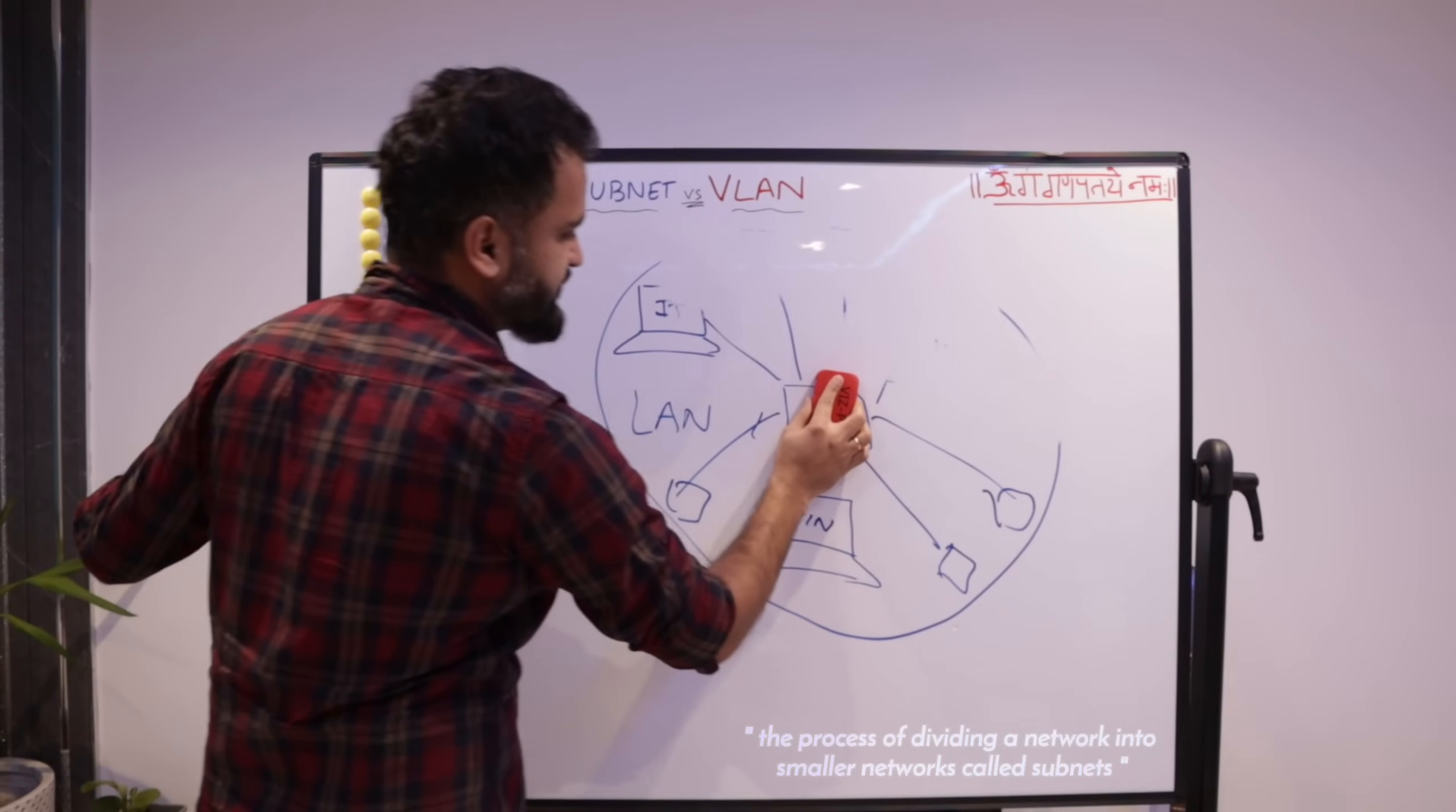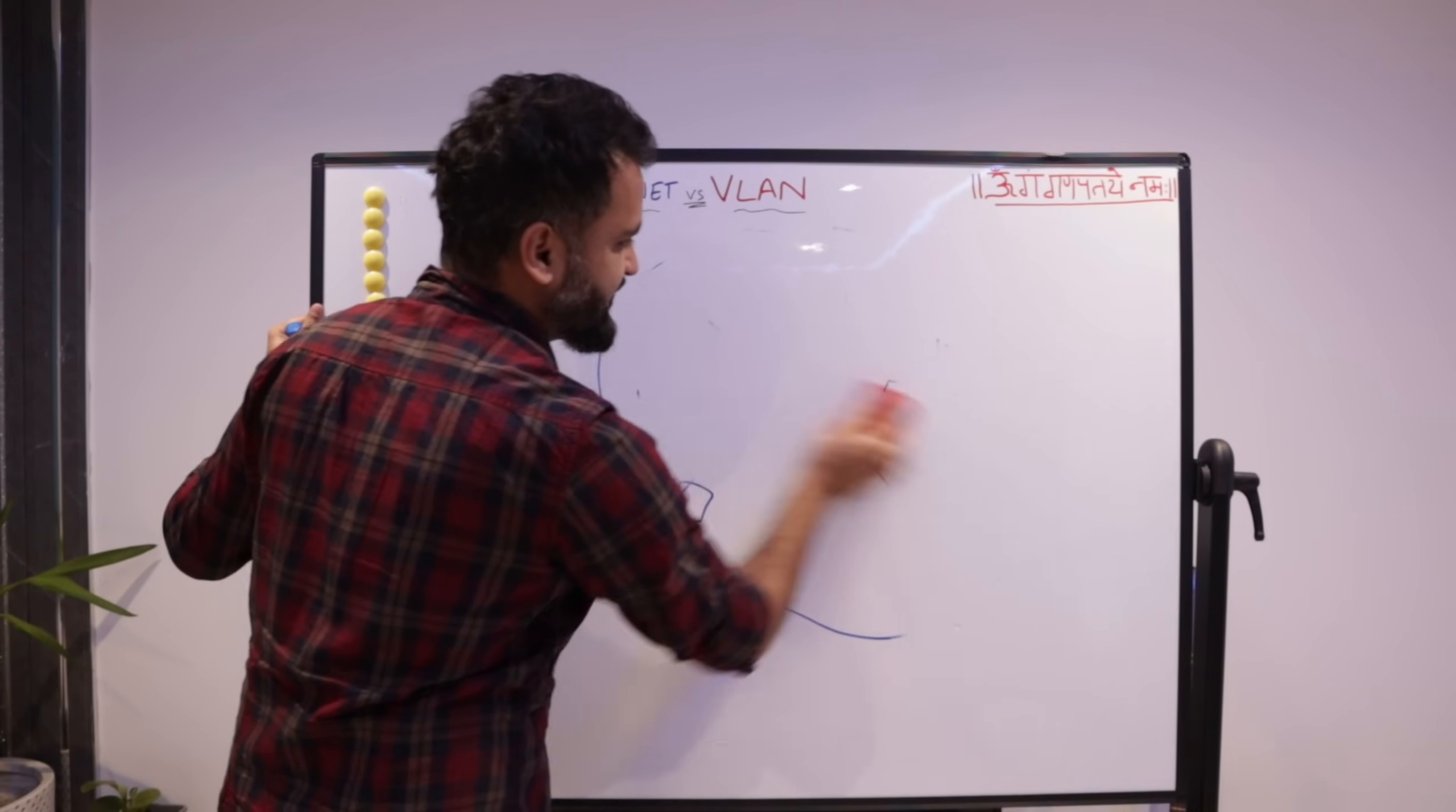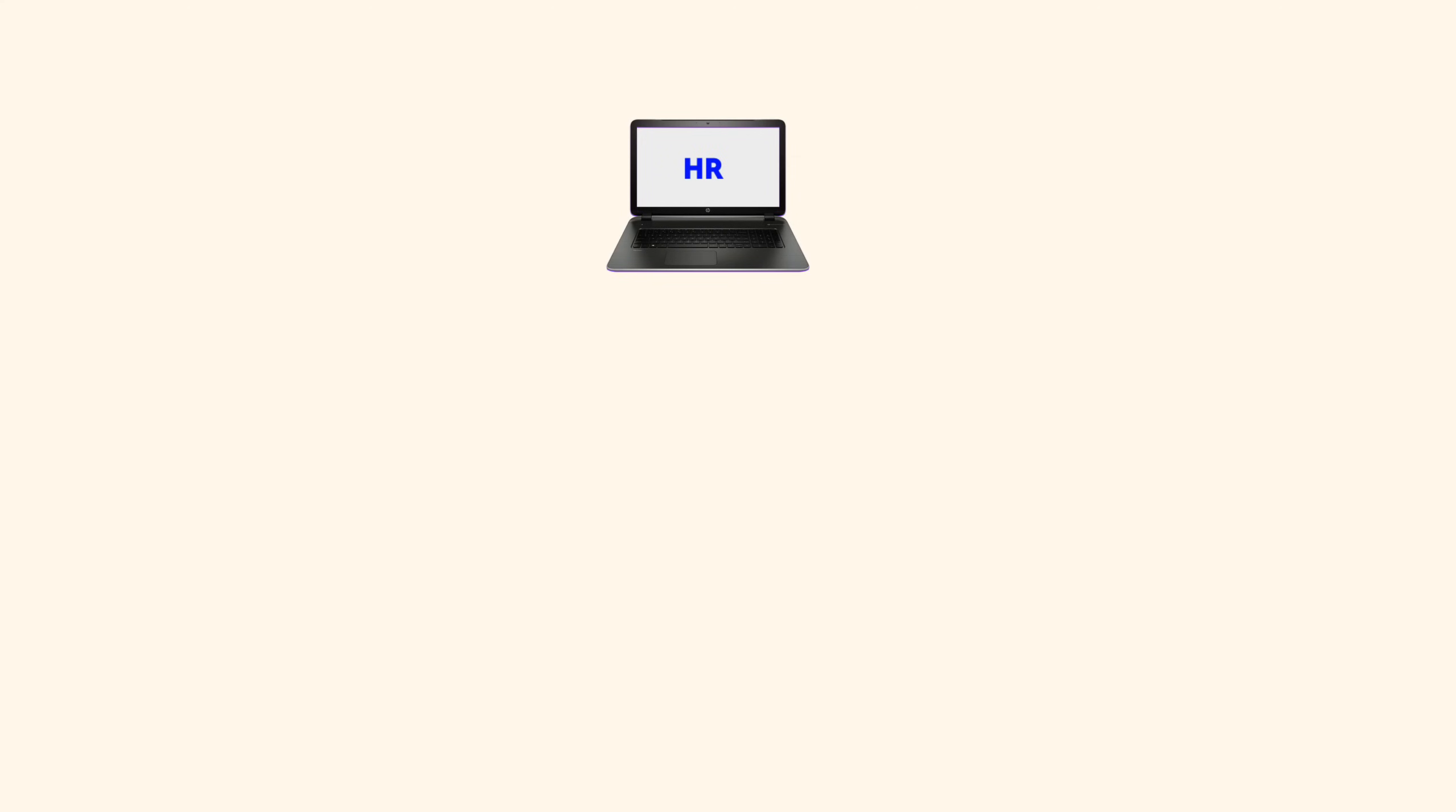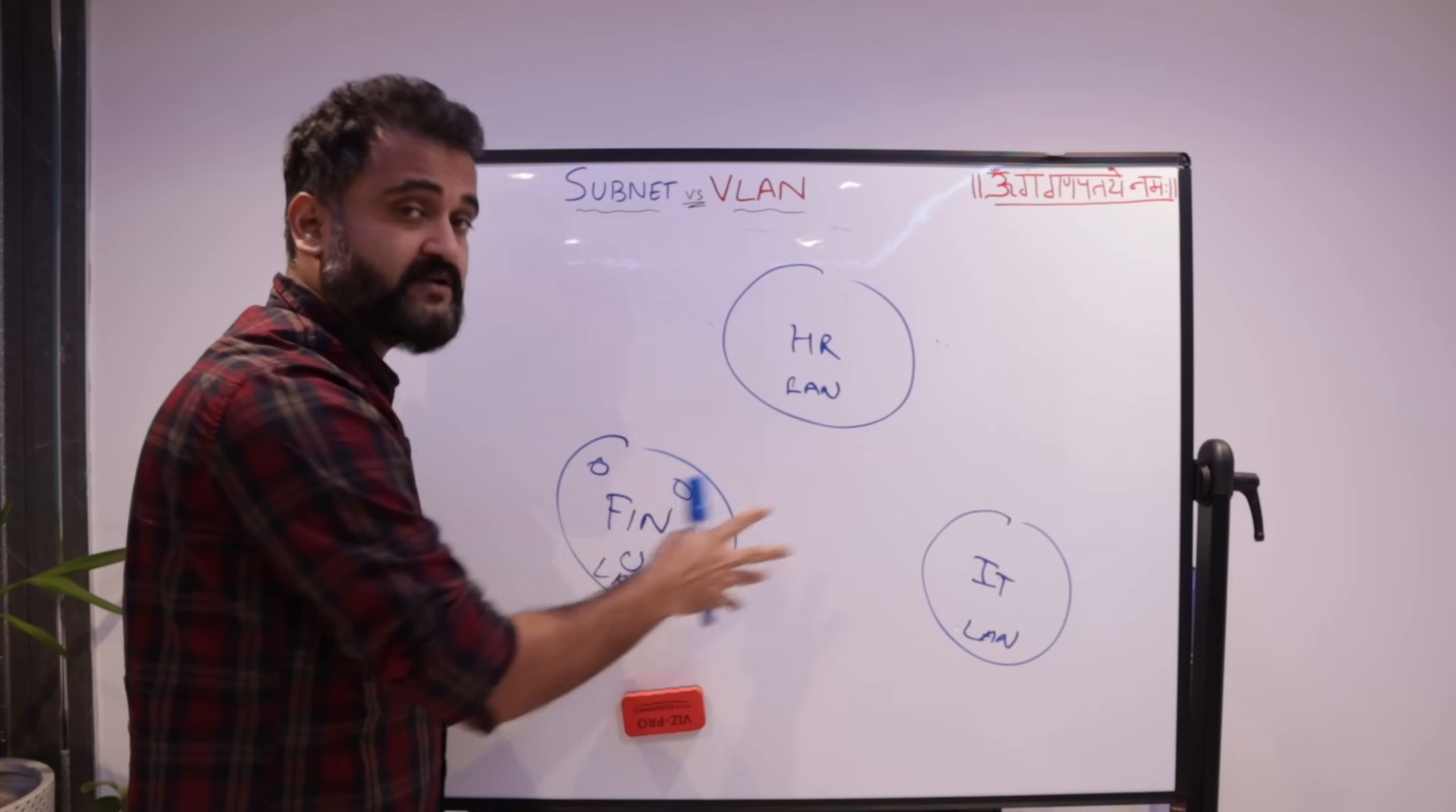The subnetting concept separates everything into manageable smaller networks. So that is called subnetting, it is like breaking a large piece of cake into smaller pieces. So basically, what you will do, you will separate your HR, you will separate your finance, and you will separate your IT. Whatever devices want to talk to each other within this domain, this would be one LAN, this would be a separate LAN. And this would be a third LAN and will add to managing the network better than it will also add to the security.